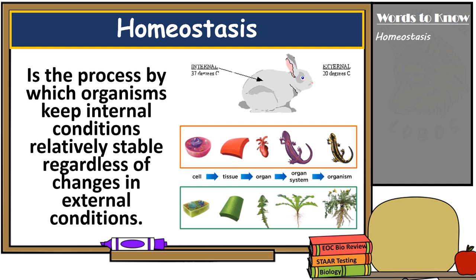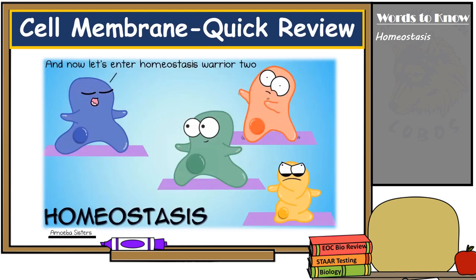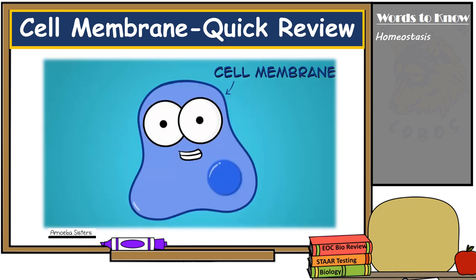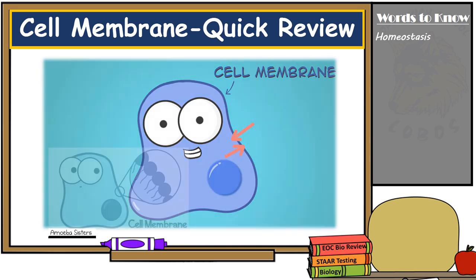Living things maintain homeostasis in various ways. For the most part, homeostasis begins at the cellular level, in which cells must maintain internal stable environments by controlling what goes in and out of the cell. This is the job of the cell membrane, which is the selectively permeable phospholipid bilayer surrounding the cell, and it helps regulate homeostasis by being selective in what materials enter and exit the cell.